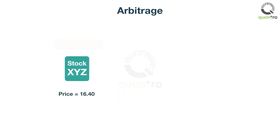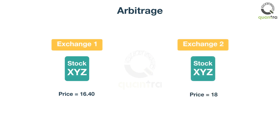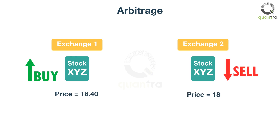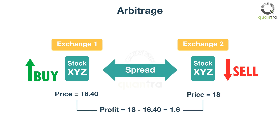For example, say that the price of a stock XYZ is 16.40 on one exchange and 18 on another, then there exists an arbitrage opportunity. Here, you buy the stock at 16.40 and sell at 18, thereby making a riskless profit of $1.60, excluding any transaction costs. The difference in the price is known as the spread. This kind of arbitrage is known as pure arbitrage.